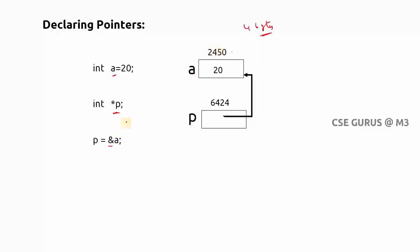Now I write p = &a. Ampersand means address — address of a, which is 2450. I am assigning 2450 to p, so the value inside p is now 2450. p is storing the address of another variable. That's why we call a pointer a variable which is used to store the address of another variable.